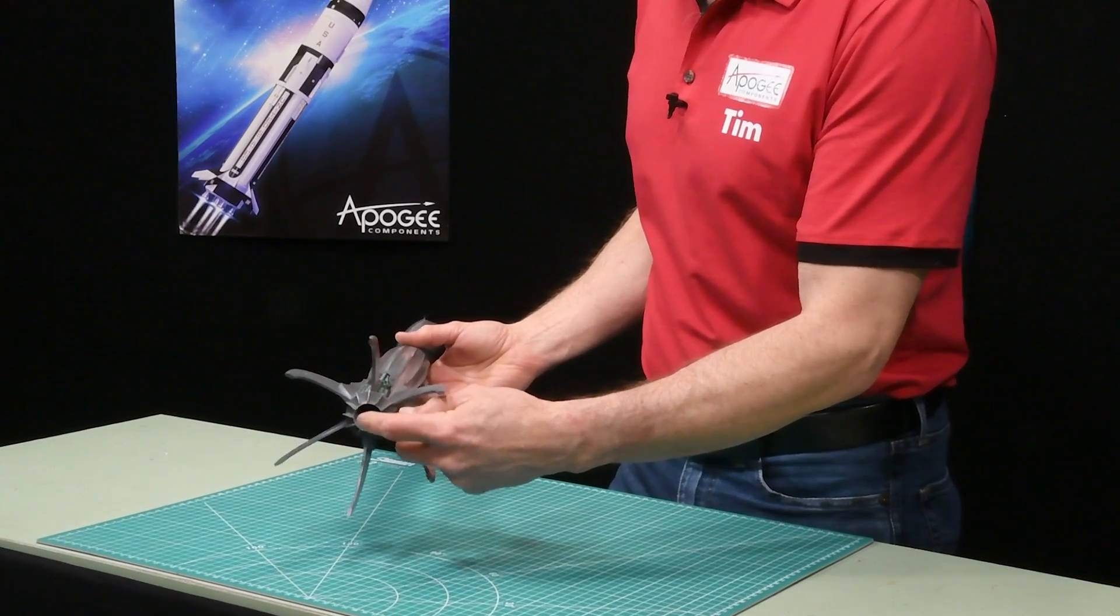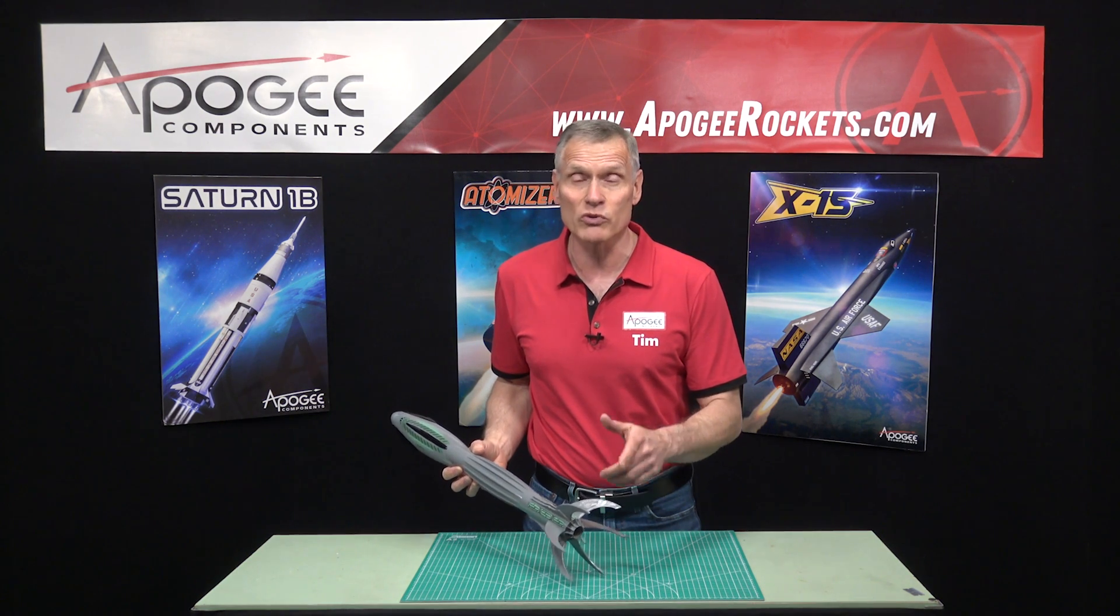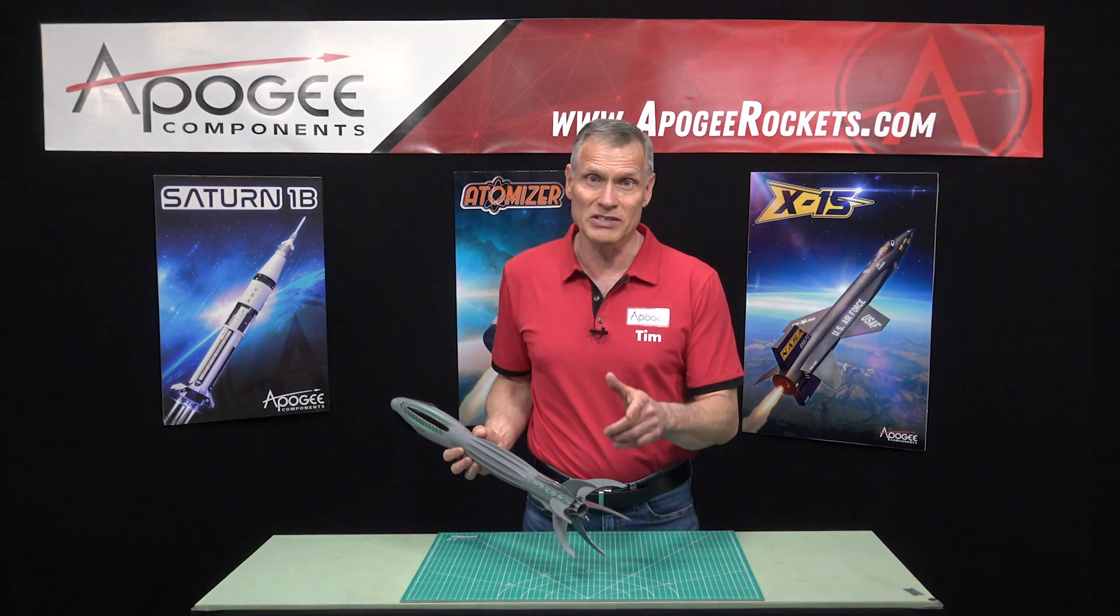It's based on a BT-60 size tube that's 1.6 inches in diameter. Inside, back here at the back, we have a motor mount that accepts 24 millimeter diameter motors, which are the C's, D's, and E motors.